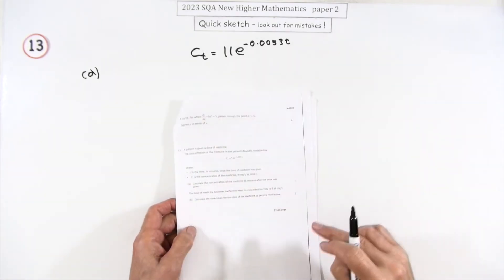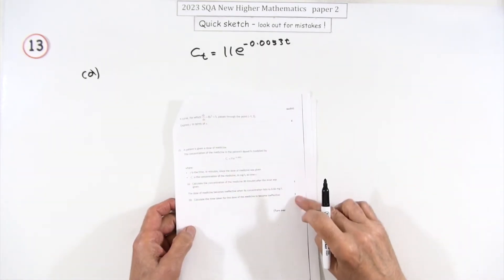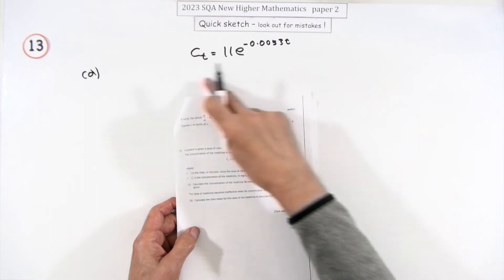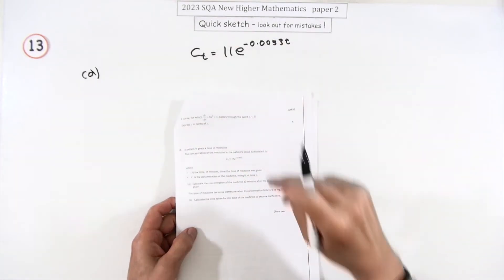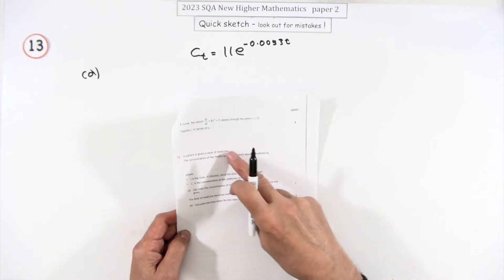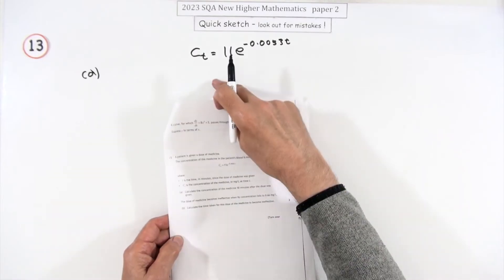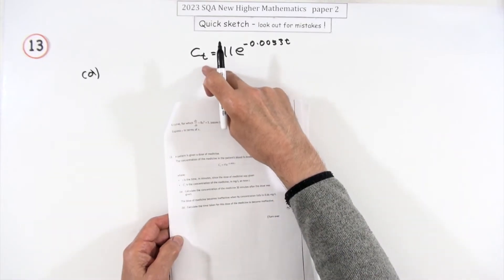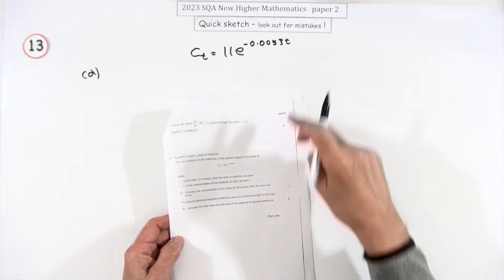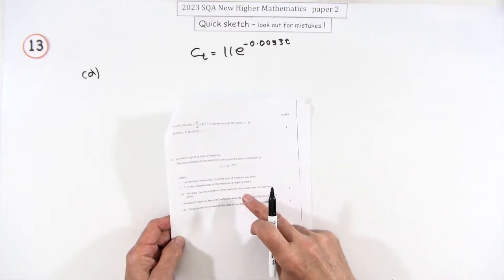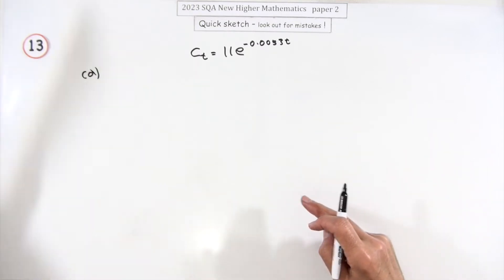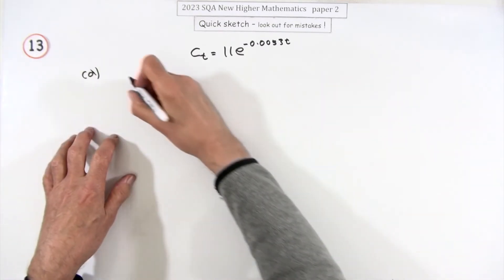Number 13 from Paper 2 — a format question on an exponential equation. You've got this decay equation with a negative power. A patient is given a dose of medicine; the concentration after a certain time t in minutes is given by this equation. Calculate the concentration 30 minutes after the dose — just one mark because you're just putting in numbers.